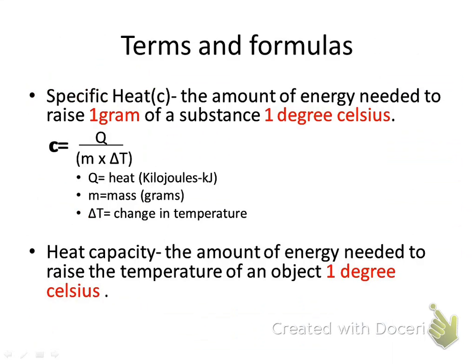Specific heat is the amount of energy needed to raise one gram of a substance one degree Celsius. It is a set value determined for each element or compound. The formula we'll use is: lowercase c equals Q divided by mass times change in temperature, where Q is the amount of heat in kilojoules. We may not do a whole lot of calculations with it, but it's good to know what each part represents. If we have three of the four values, we can always calculate the one that is missing.